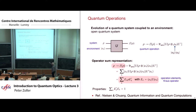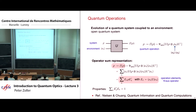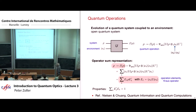I want you to remember these things because what we will do is take a quantum optical problem and identify the Kraus operators for a specific situation: we will make many time steps in the evolution of our quantum optical system coupled to an environment, and ask what the Kraus operators are — these operational elements. These are the formulas I would like you to remember.